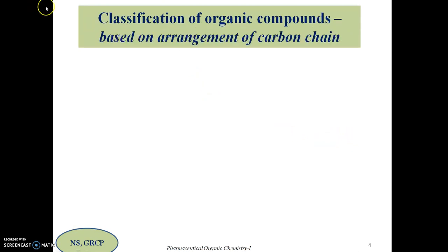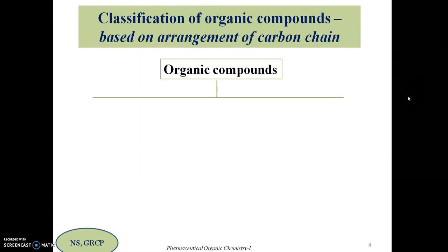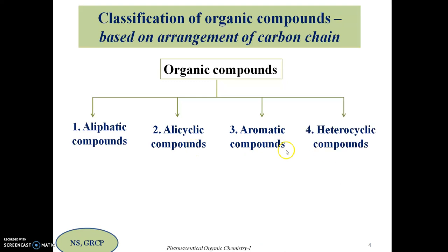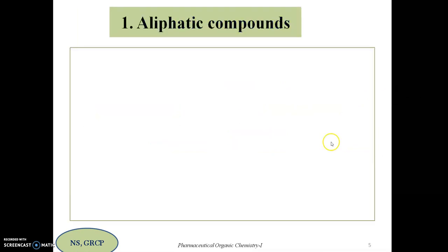The first classification is based on the arrangement of the carbon chain. Based on the network of this carbon chain or backbone present in organic compounds, they are divided into four major types: aliphatic compounds, alicyclic compounds, aromatic compounds, and heterocyclic compounds. Let us see these four classes with definitions and examples.